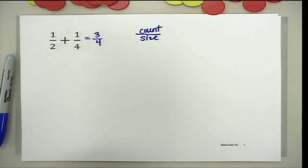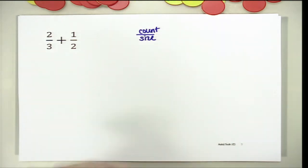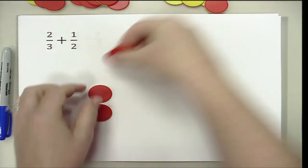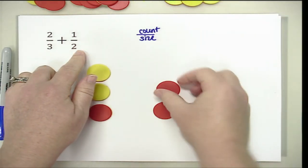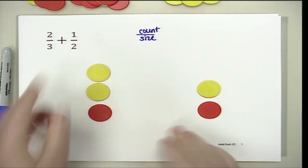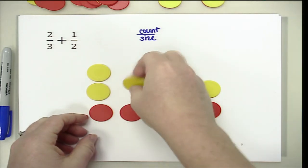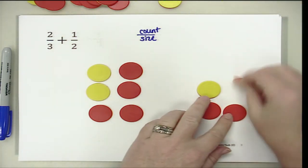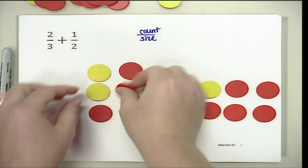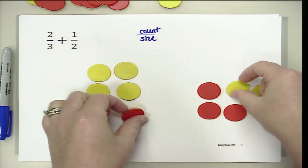The next one is 2 thirds plus 1 half. Remember we are working with count and size. I have a size of 3, and I need a count of 2, so I turn over 2 of them. I have a size of 2 and a count of 1. We want to have the same size, so I add to get a size of 6 for both. I turn them over to match counts, and since I now have the same size I am able to add the two fractions. I count and uncount — count and uncount — count and uncount.